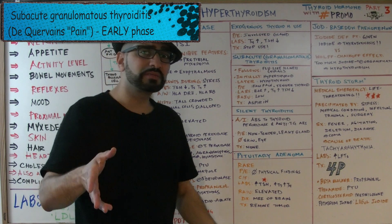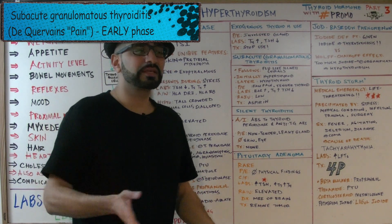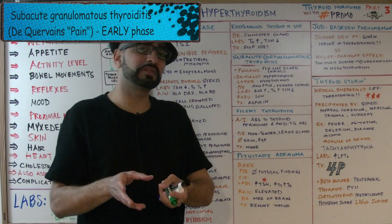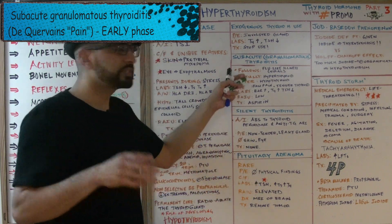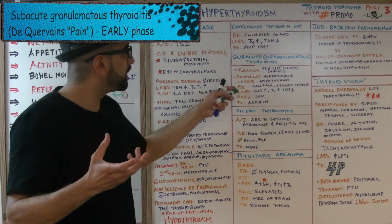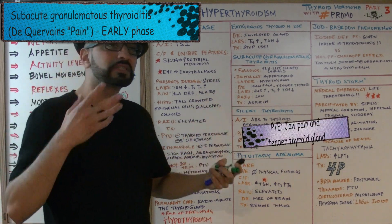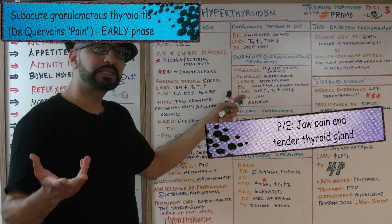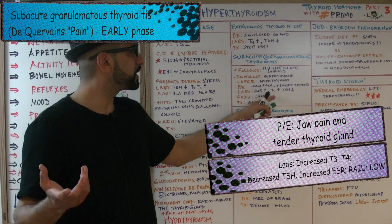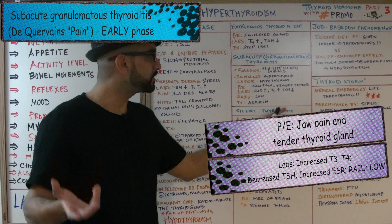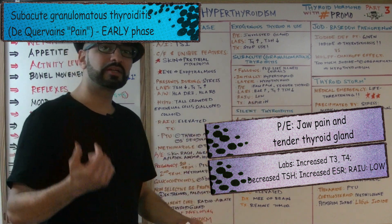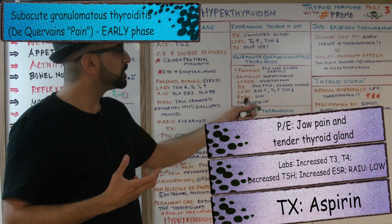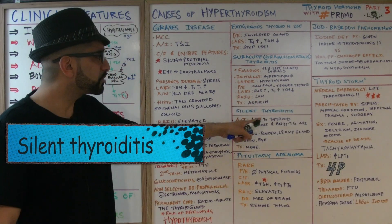Subacute granulomatous thyroiditis has an early hyperthyroid phase and a later hypothyroid phase — we're focusing on the hyperthyroid phase here. The patient presents with pain, jaw pain, and a tender thyroid. Labs show increased T4, decreased TSH, and an elevated ESR. Radioactive iodine uptake is low. Treatment: aspirin.